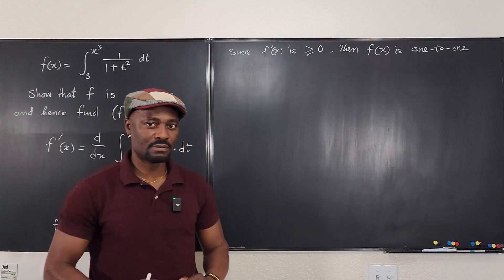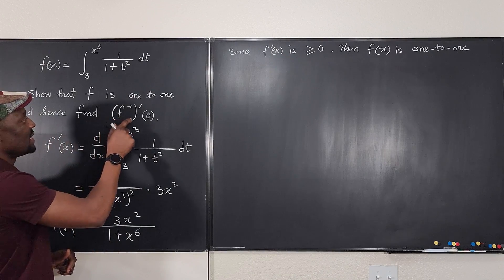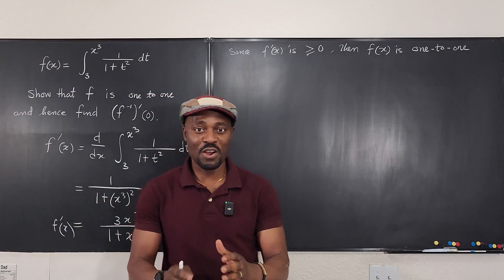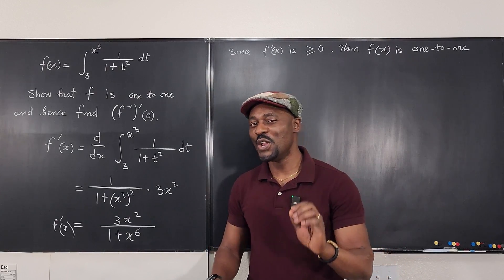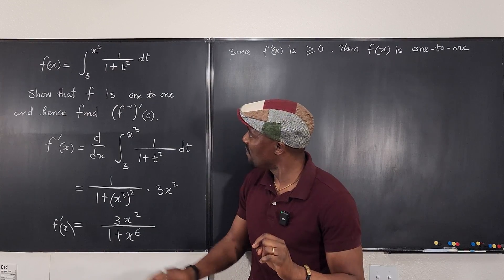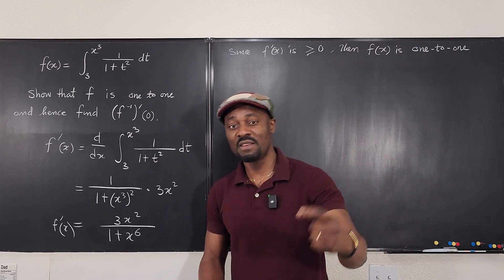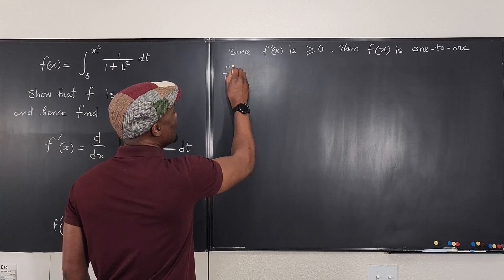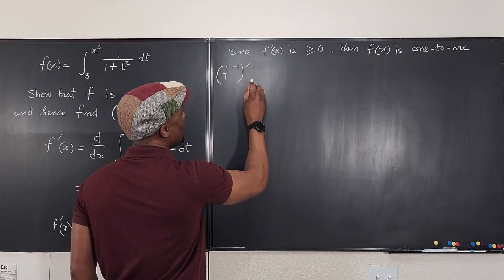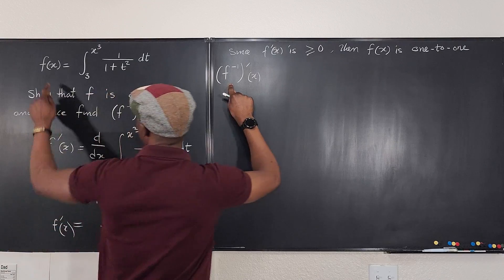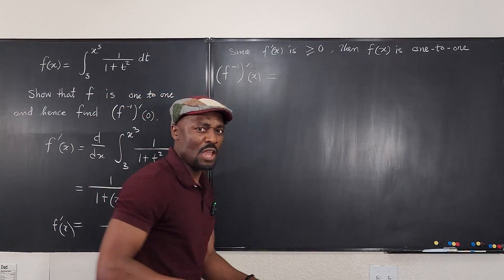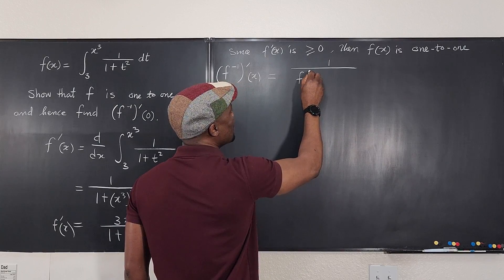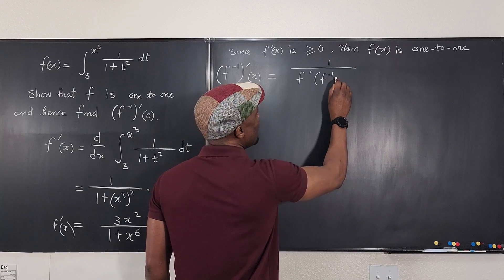Now for the second part: we need to find the derivative of the inverse function evaluated at zero. The beauty is you don't need to know the inverse function itself. You just use the formula: the derivative of the inverse of f equals 1 divided by f' evaluated at f⁻¹(x). This is a standard formula — I have another video explaining it in detail.